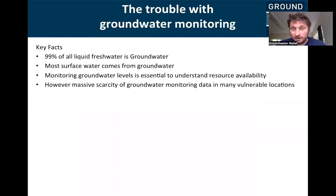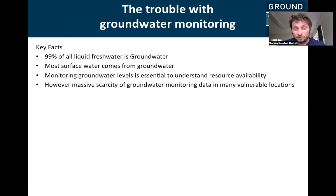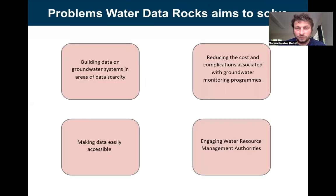99% of all liquid fresh water is groundwater. Most surface water is derived from groundwater, either through springs or stream seepage. So monitoring groundwater levels is absolutely essential for us to understand resource availability and manage these vulnerable systems. However, in many of the places we're working, there is a huge scarcity of groundwater monitoring data,